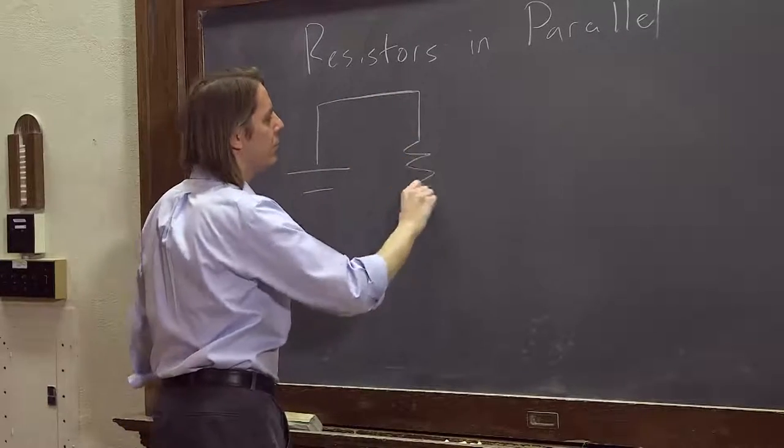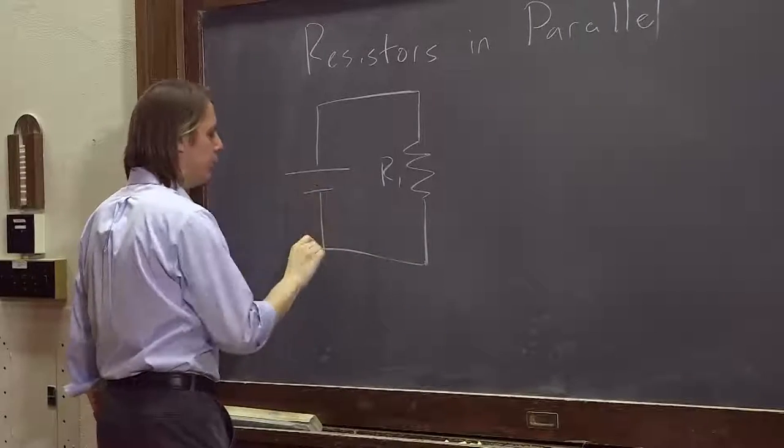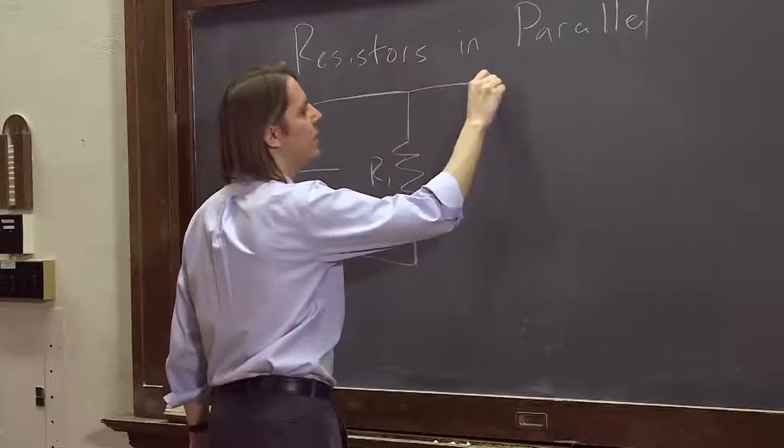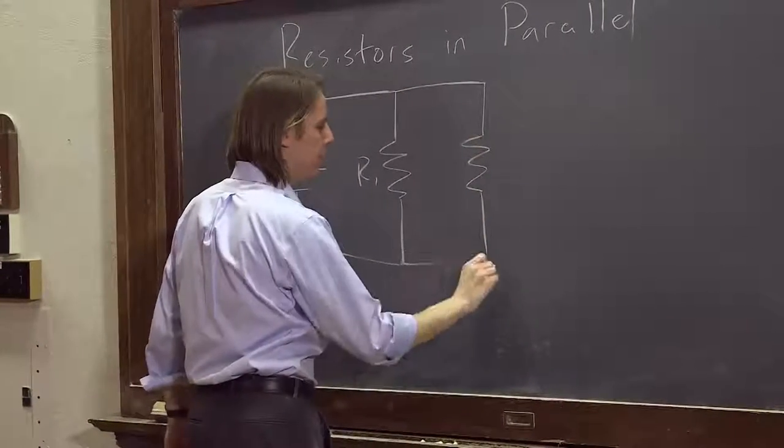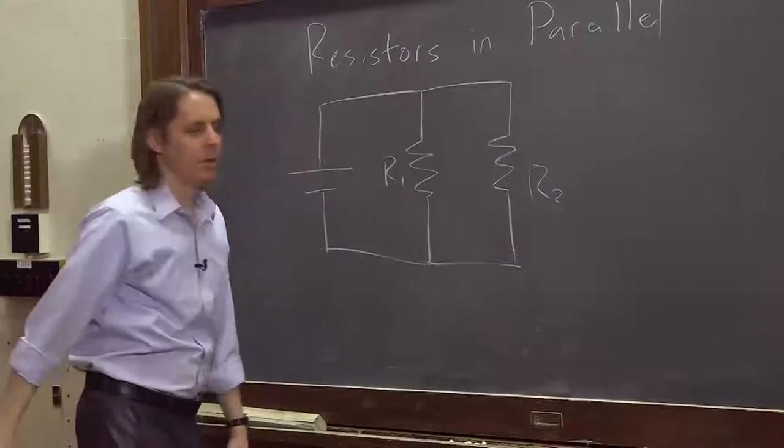And then we're going to have one resistor here, R1, in a simple loop, and then have it split and go to the other resistor here, R2, like that. So this is what we call parallel.